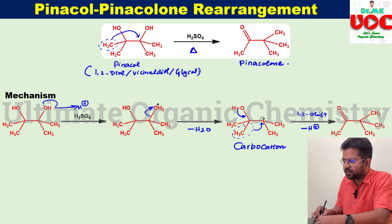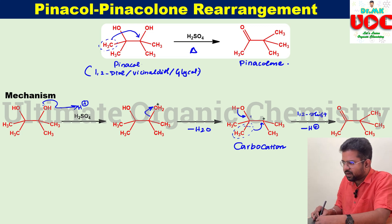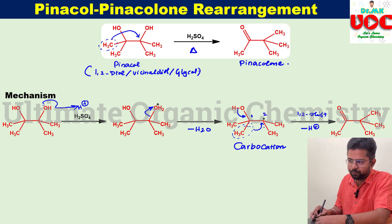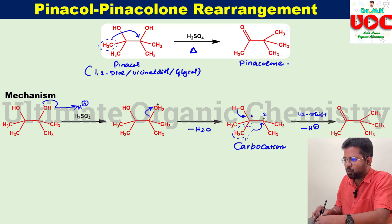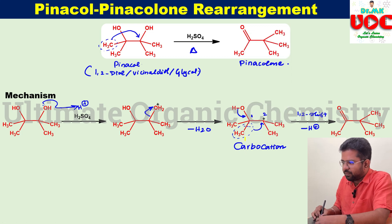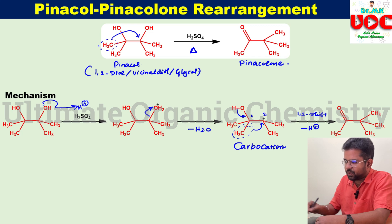This rearrangement is said to be a 1,2-shift of the methyl group. This carbon-carbon bond is broken — this is given number one and this carbon is given number two. The methyl group on carbon one is shifting from here to here, and that is said to be a 1,2-shift of the methyl group.